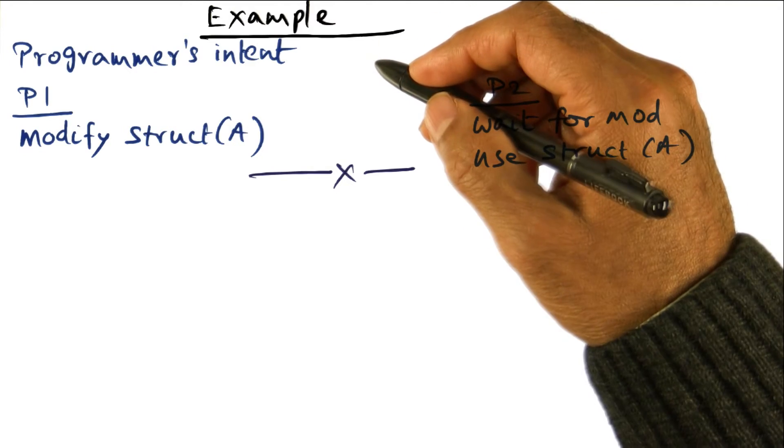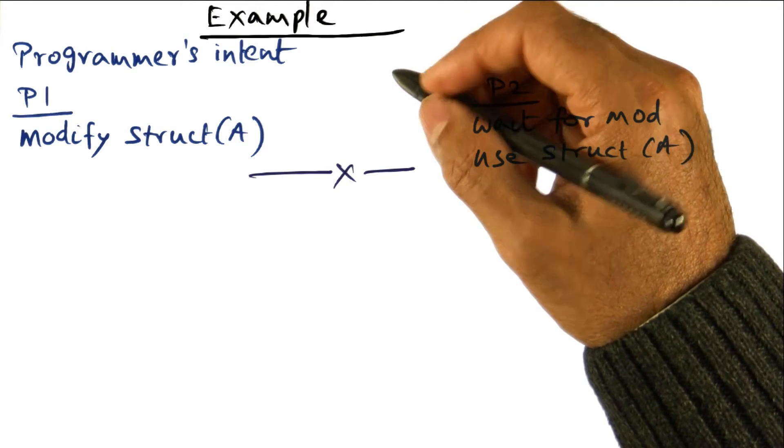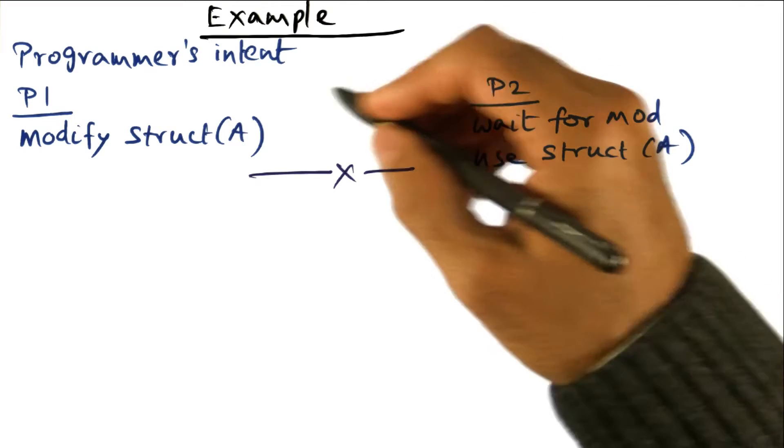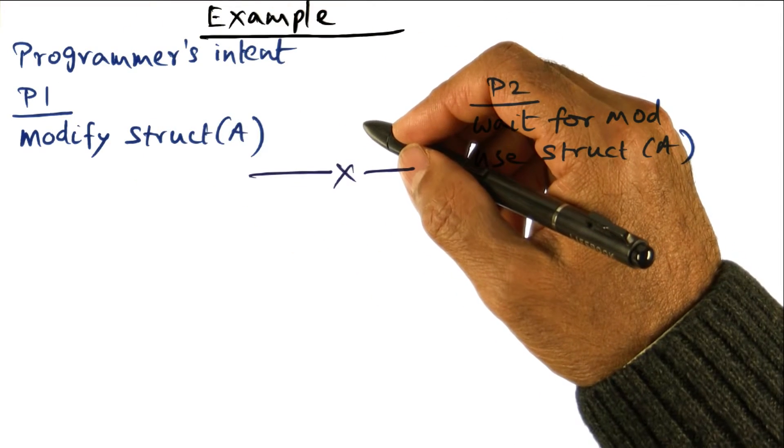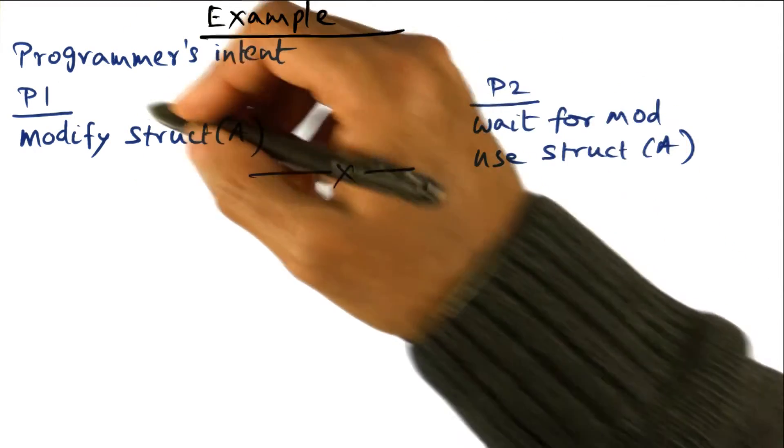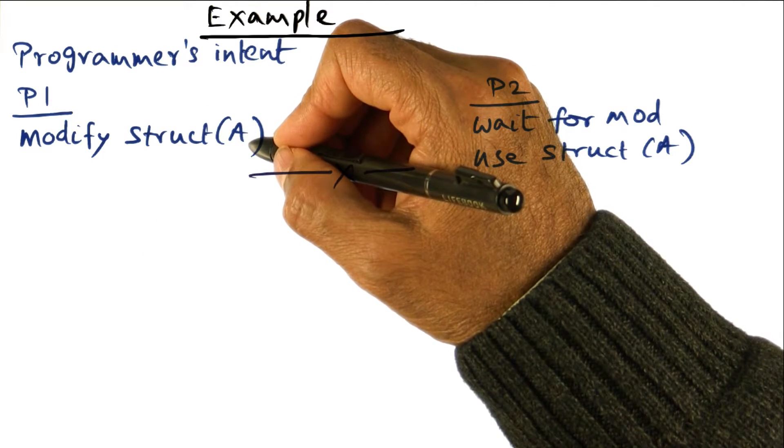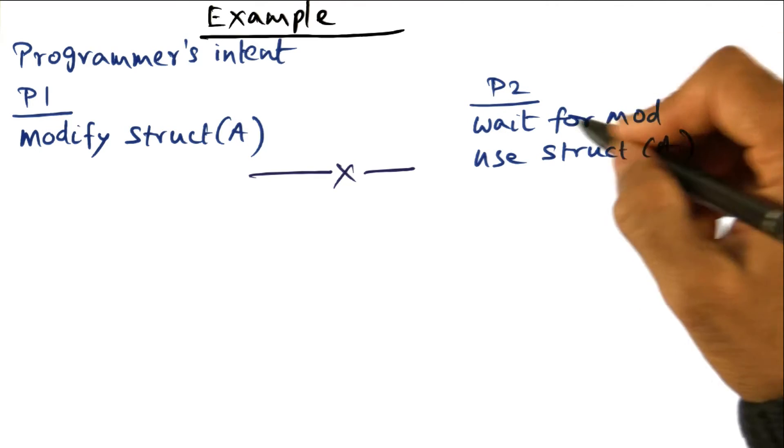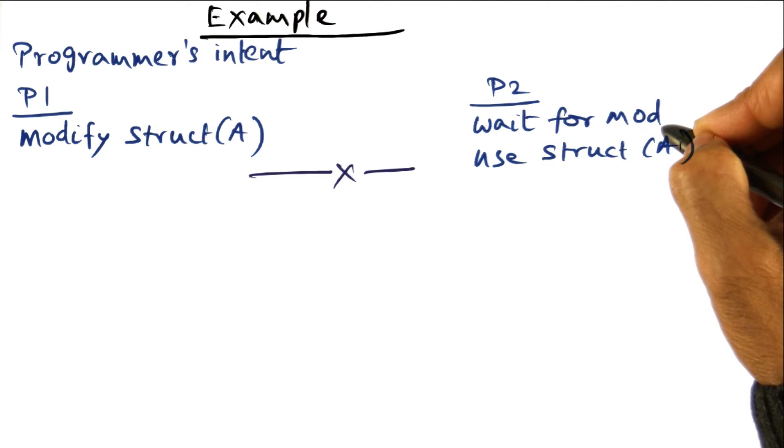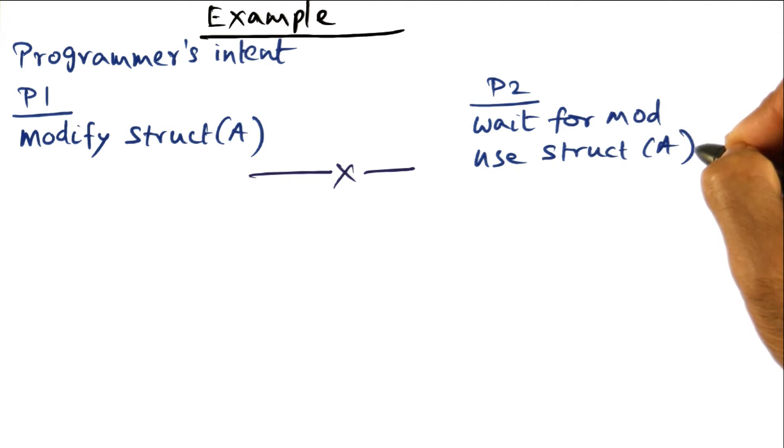Let's understand how the RC memory model works with a concrete example. Say the programmer's intent is that one thread of his program is going to modify a structure A, and there is another thread that is going to wait for the modification and then use structure A.